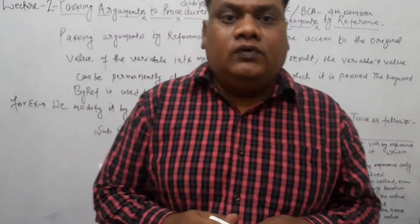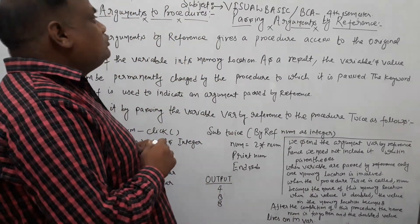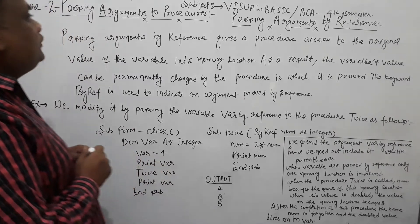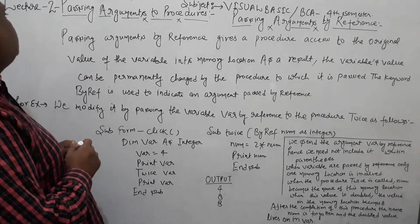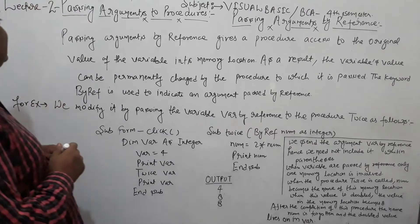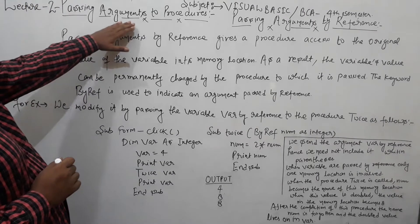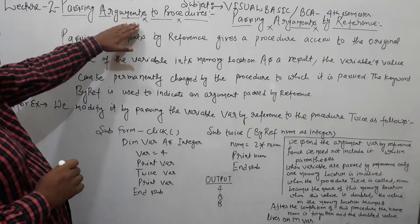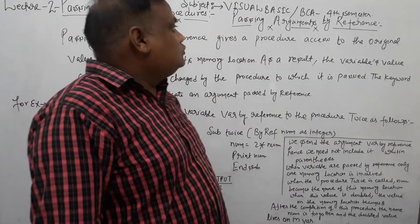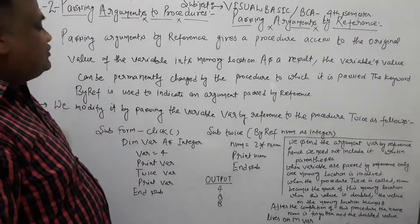Hello students, I hope all of you will be very fine. Today our subject is Visual Basic for BCA 4th semester, and the most important topic is Passing Argument to a Procedure. We will discuss BCA 4th semester Visual Basic online.